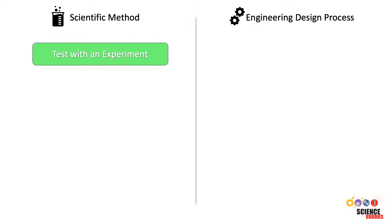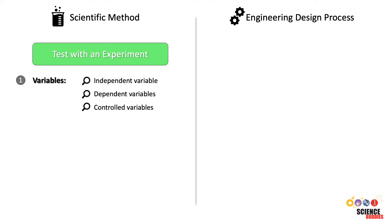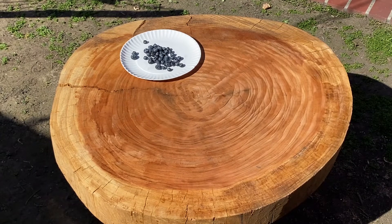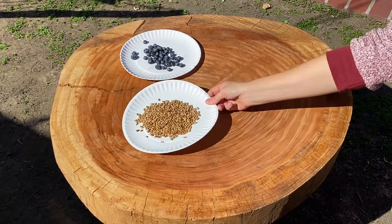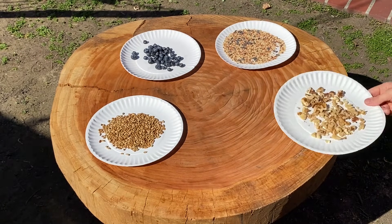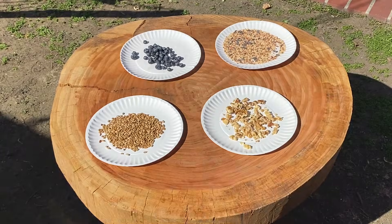When following the scientific method, we will test our hypothesis by designing and carrying out an experiment. To do this, we first need to identify the variables of the experiment. Then we come up with an experimental procedure that will allow us to collect data about the birds' food preferences. For example, we could put out several identical containers that each contain a different type of food and then collect data about the number of birds that visit each container, or record how quickly the food in each container empties.